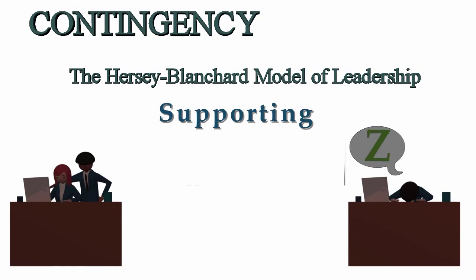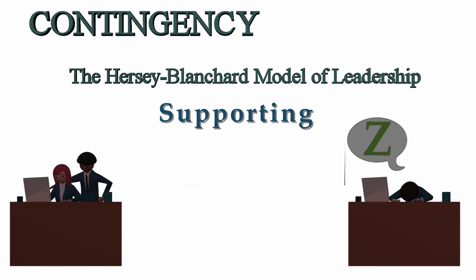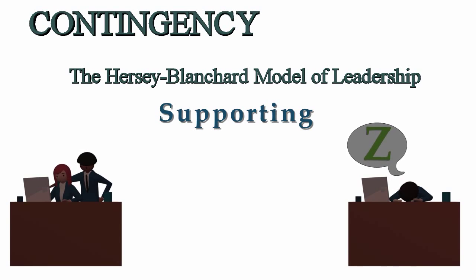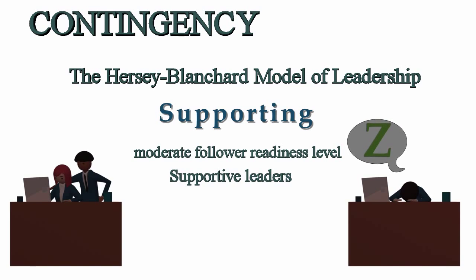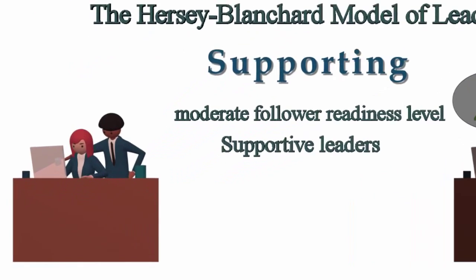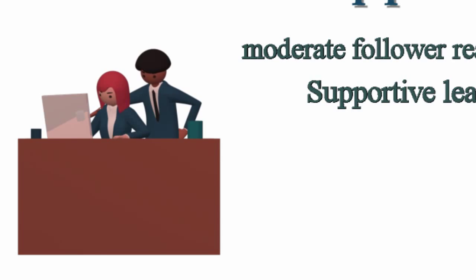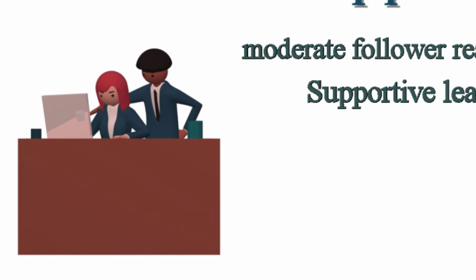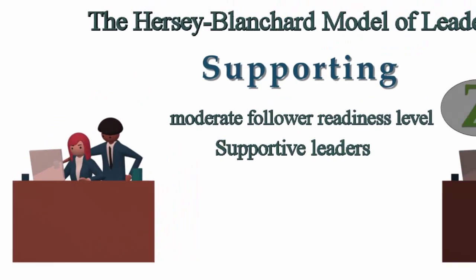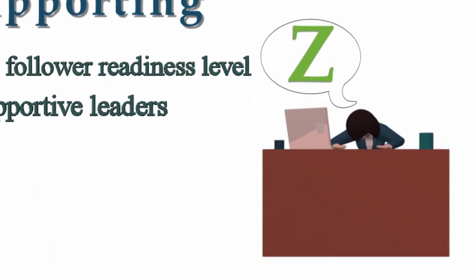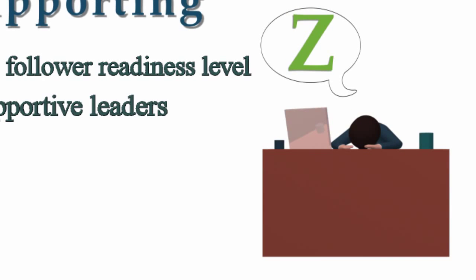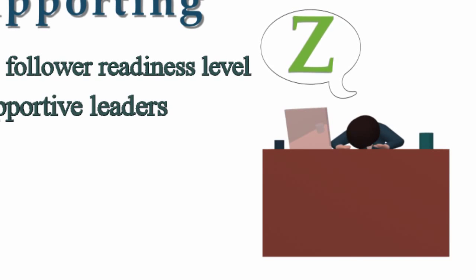In the supporting leadership style, the manager and subordinates share the responsibility for decision-making, and the manager leads with a non-directive approach. A subordinate with a moderate follower readiness level is suited for this approach. Supporting leaders provide emotional support to employees, treat employees well, care about them on a personal level, and are encouraging. Supporting leaders are predicted to be effective when employees are under a lot of stress or performing boring, repetitive jobs.